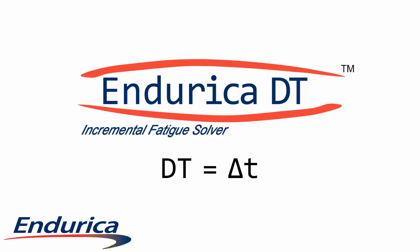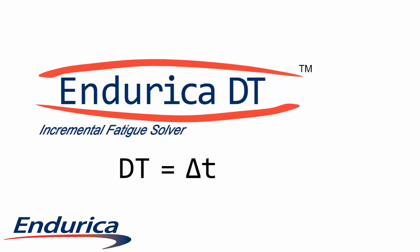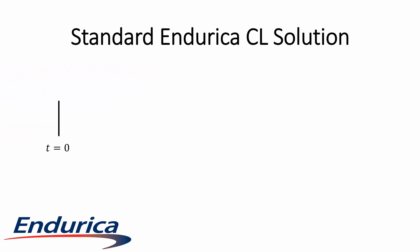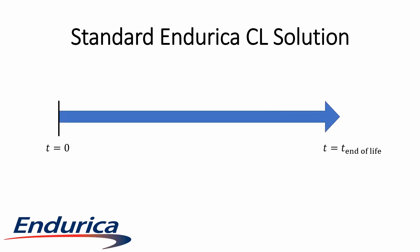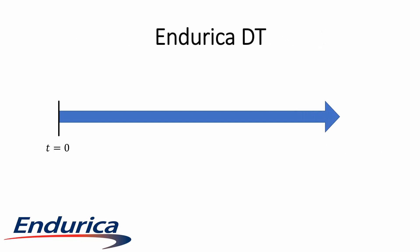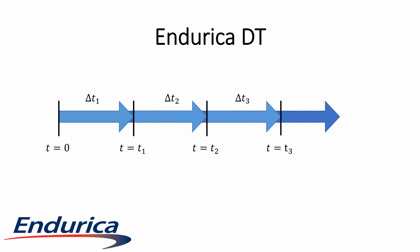Endurica DT is an incremental fatigue solver that expands the capabilities of Endurica CL. For this presentation, you can think of DT as an increment of time. With Endurica CL, a standard analysis starts at time zero and integrates a given history until end of life. Endurica DT starts and ends at the times you specify, so that new histories can be accumulated repeatedly until end of life.